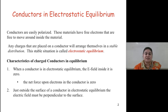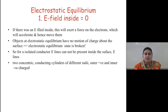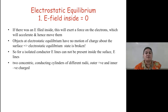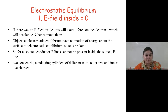Just outside the surface of a conductor in electrostatic equilibrium, the electrical field must be perpendicular to the surface. If there were an electrical field inside the conductor, it would exert a force on the electrons, which would accelerate and hence move them. Since objects at electrostatic equilibrium have no motion of charge, the equilibrium state would be broken. Therefore, for an isolated conductor, electrical field lines cannot be present inside the surface.